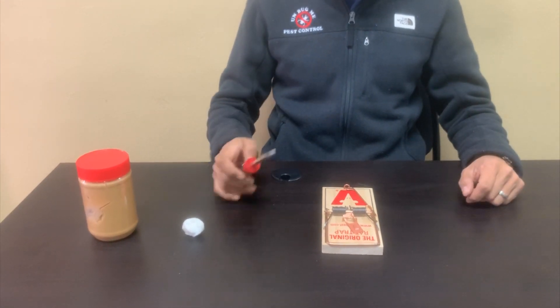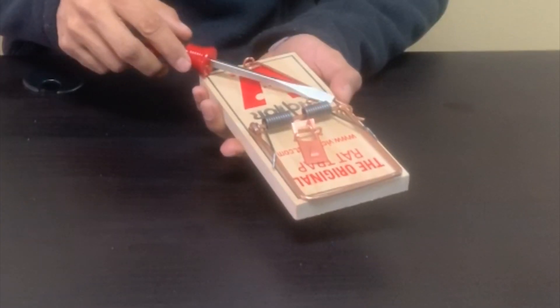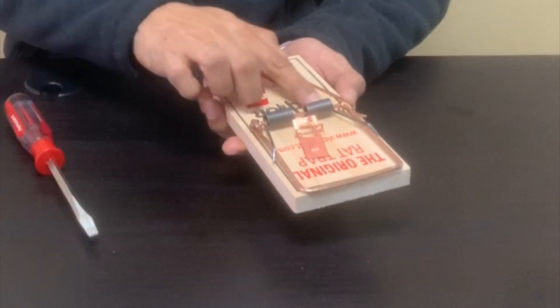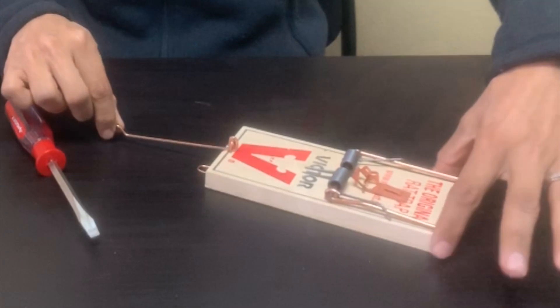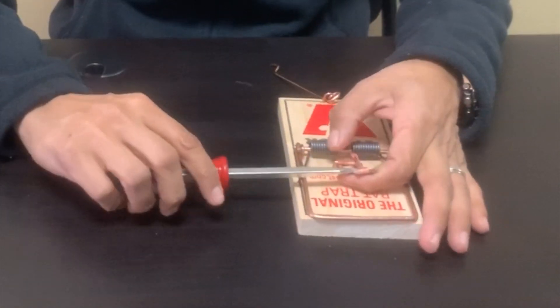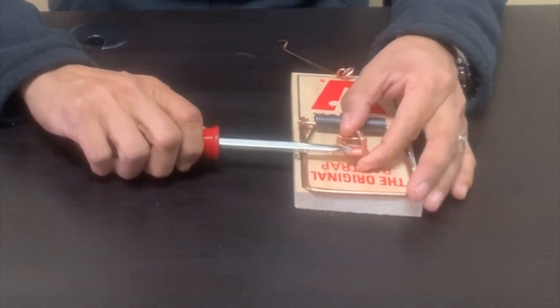To bait the trap, take the screwdriver and remove the safety pin from the board. Think of the hold down bar as the tail attached to the back of the trap. With the screwdriver, open up the latch on the catch portion of the trap.